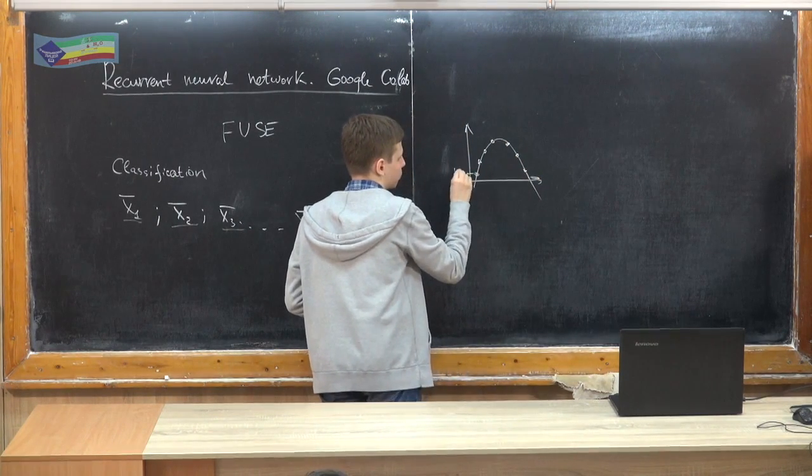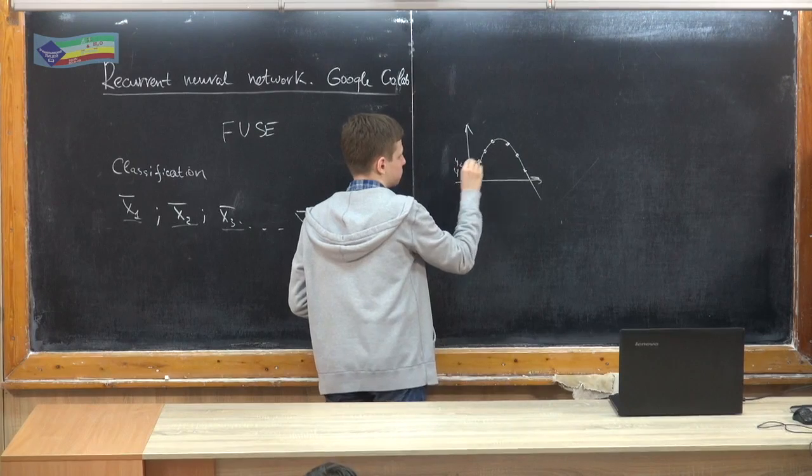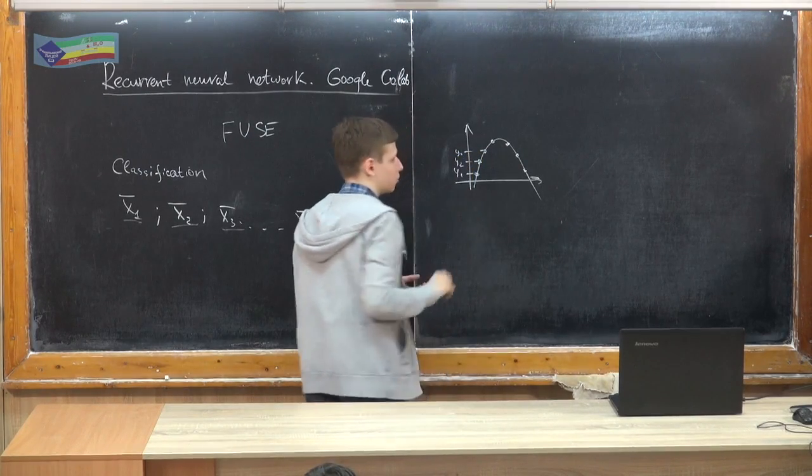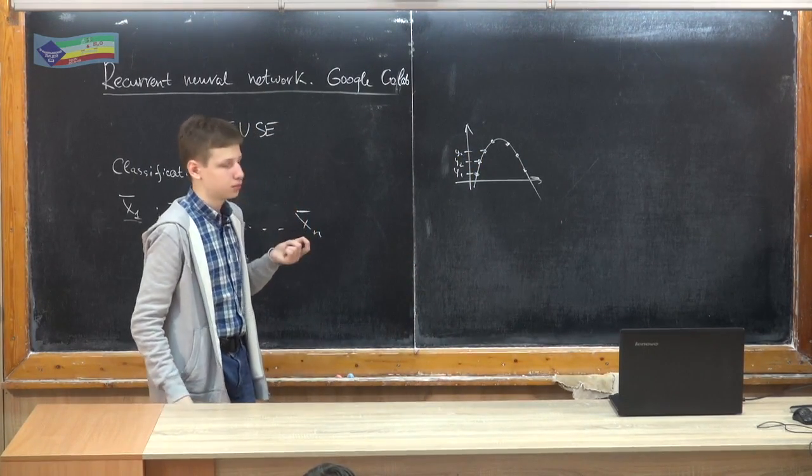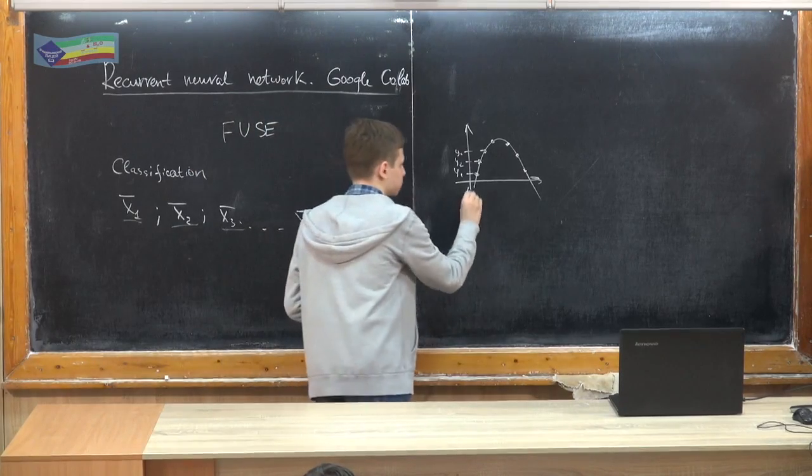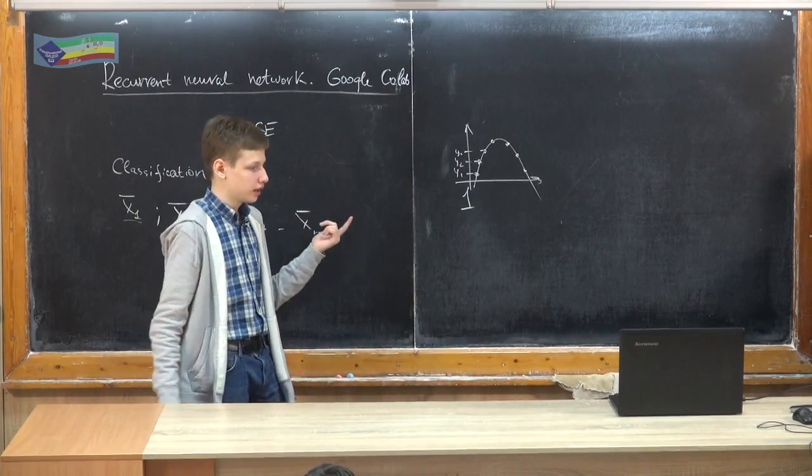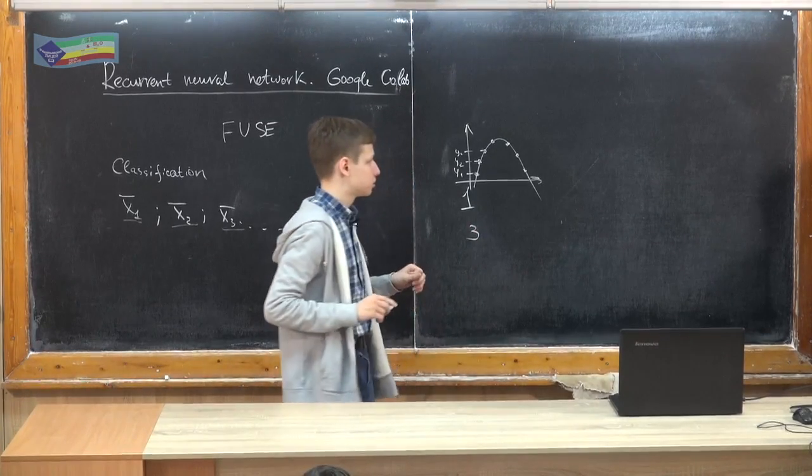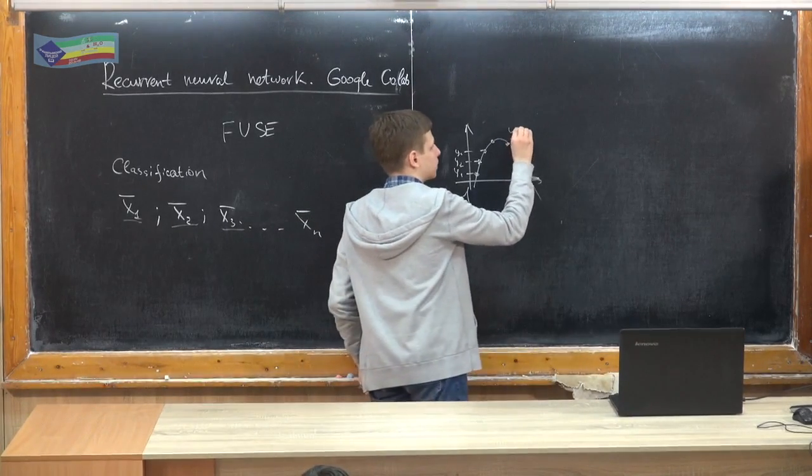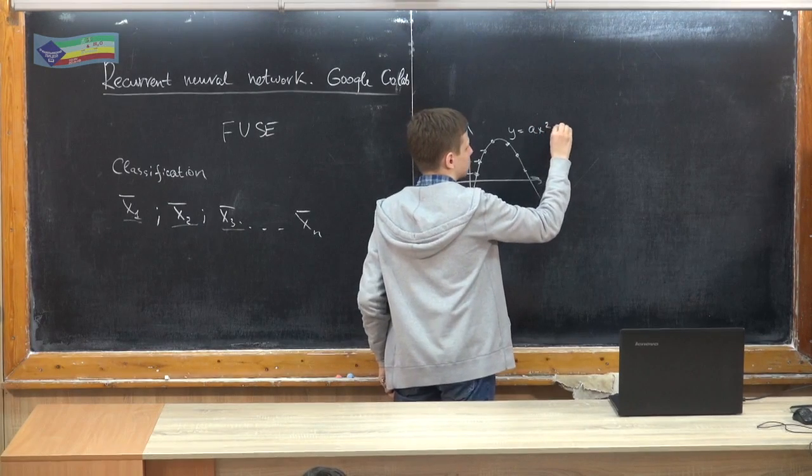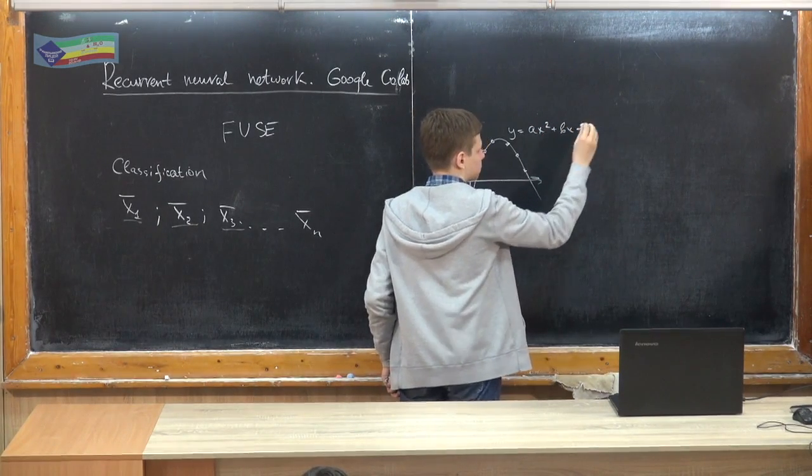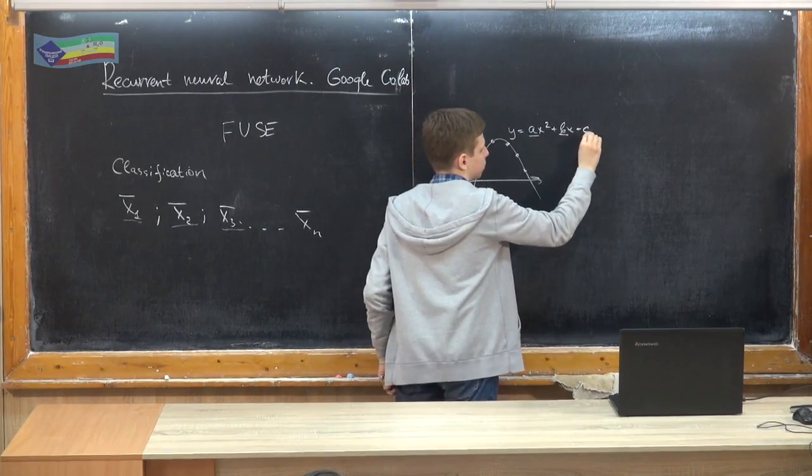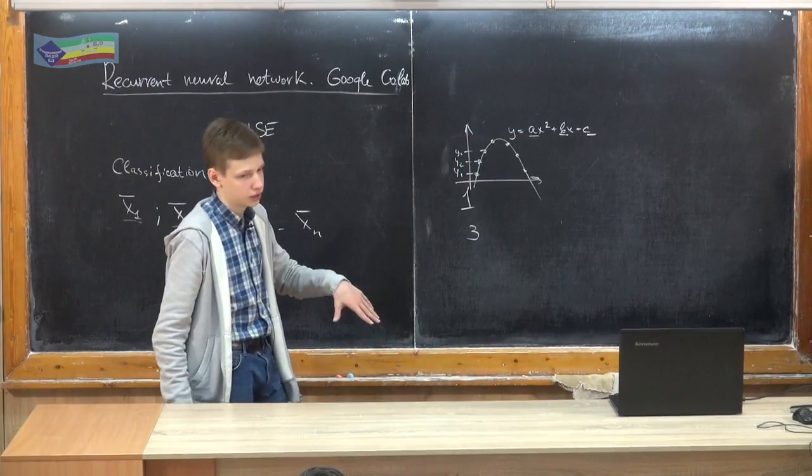First we need to import some libraries. In that example we have a random parabola and we output its graph. Our inputs are going to be Y values. So this is Y1, Y2, Y3. So our input dimension is going to be one because we have just one number and output dimension is going to be three numbers.